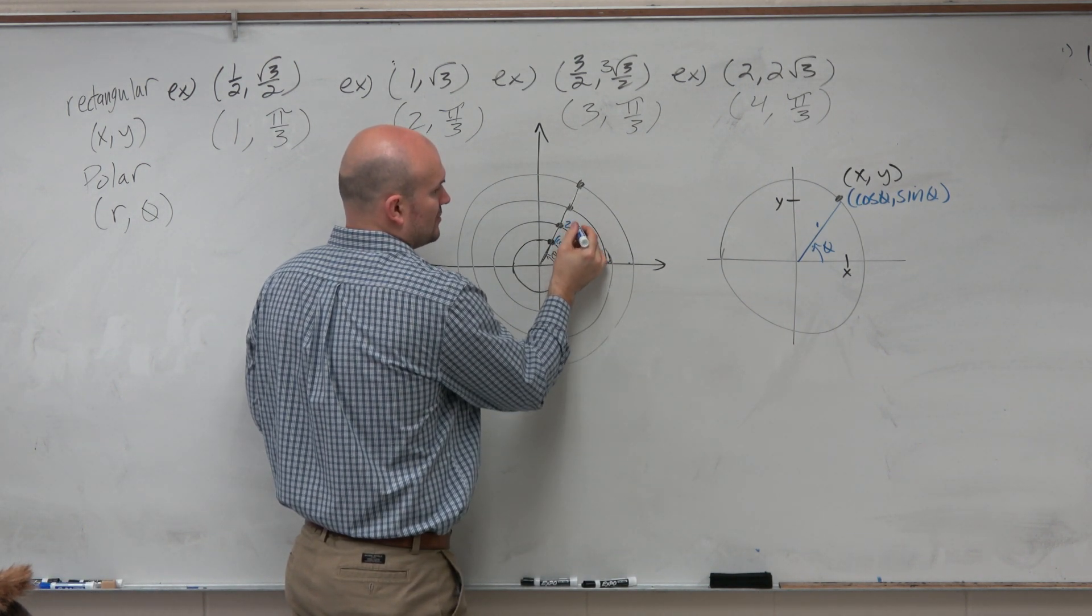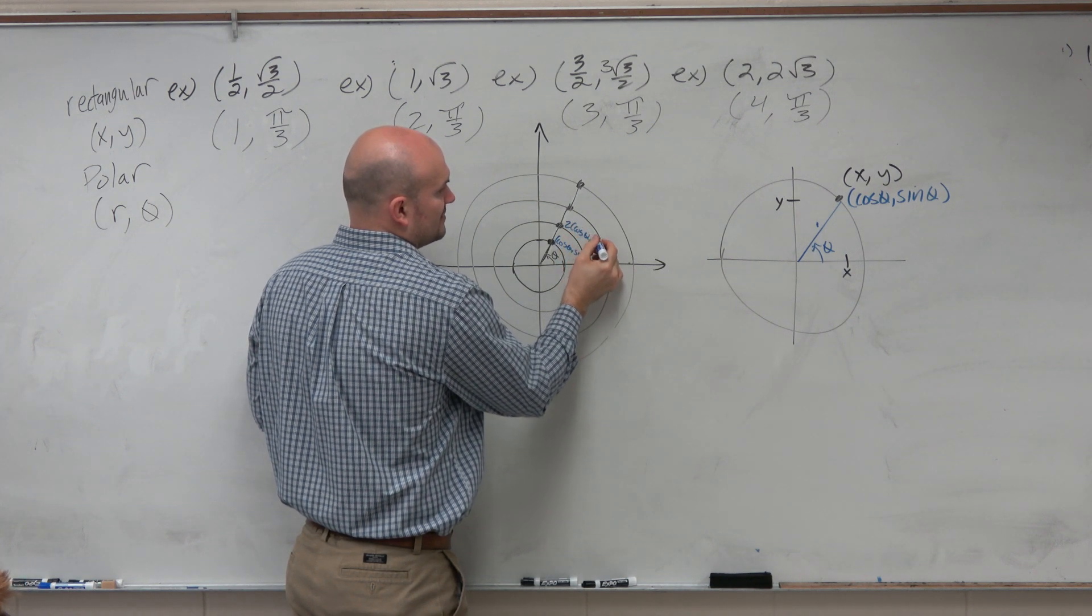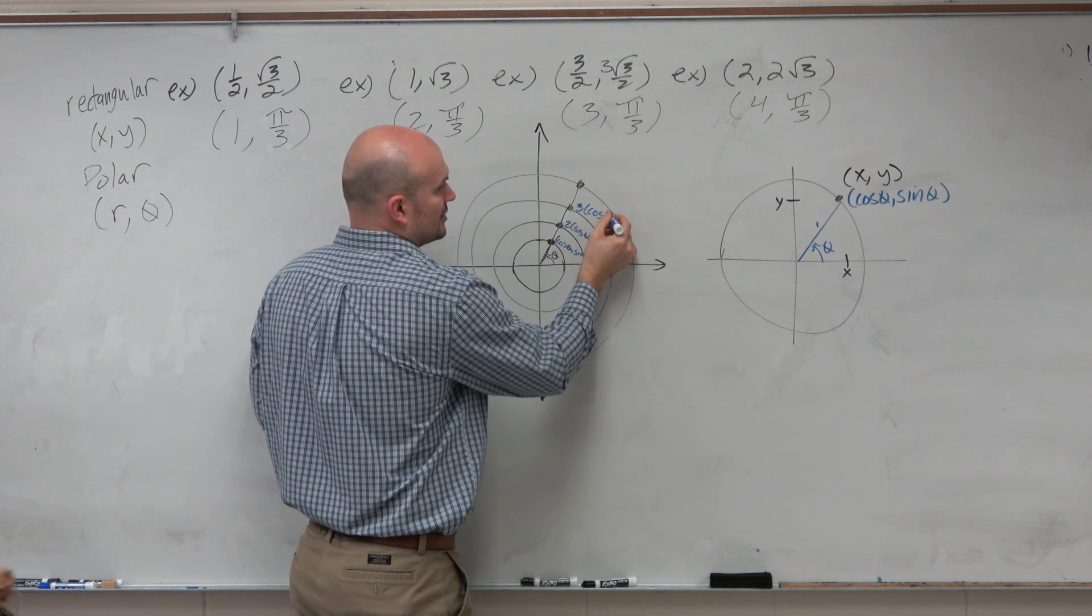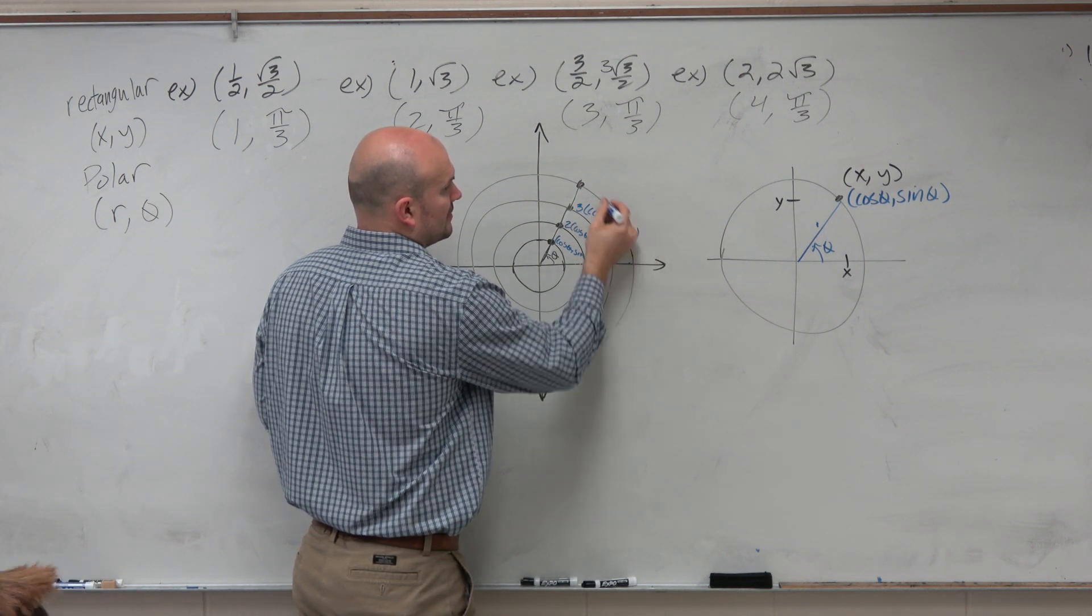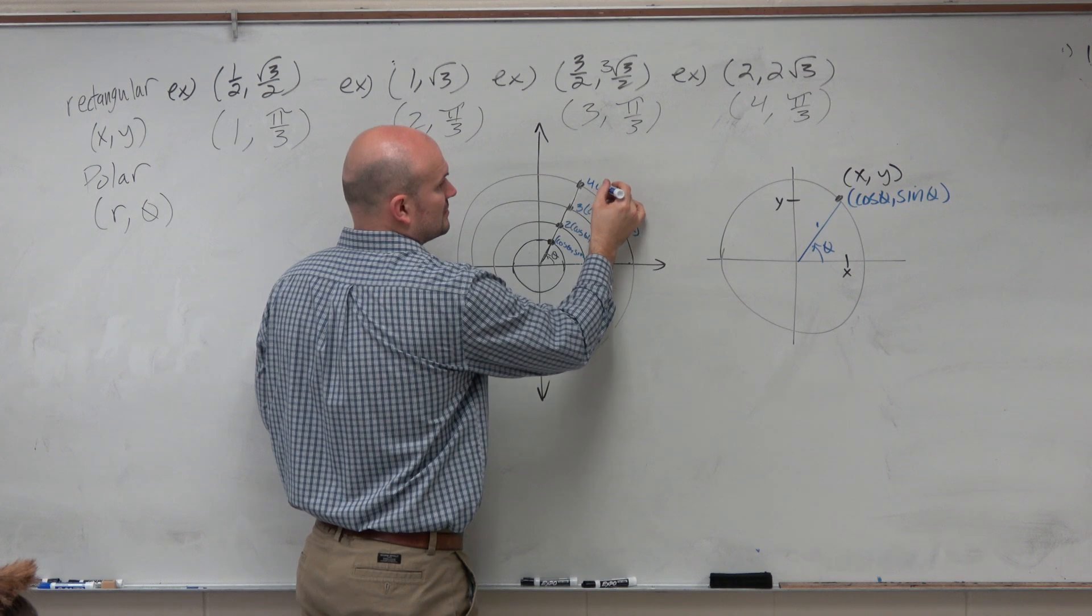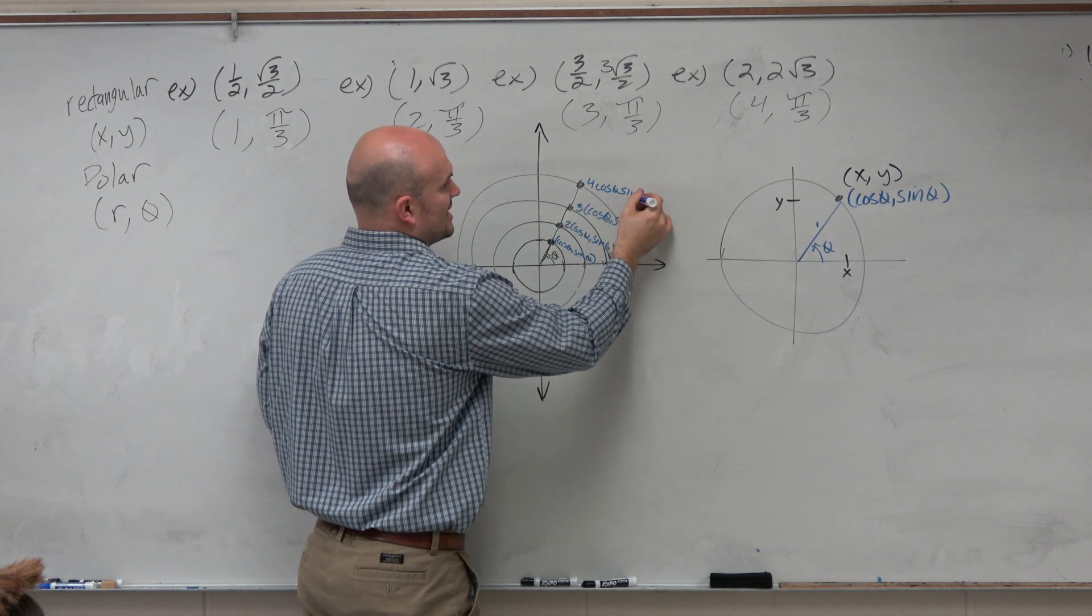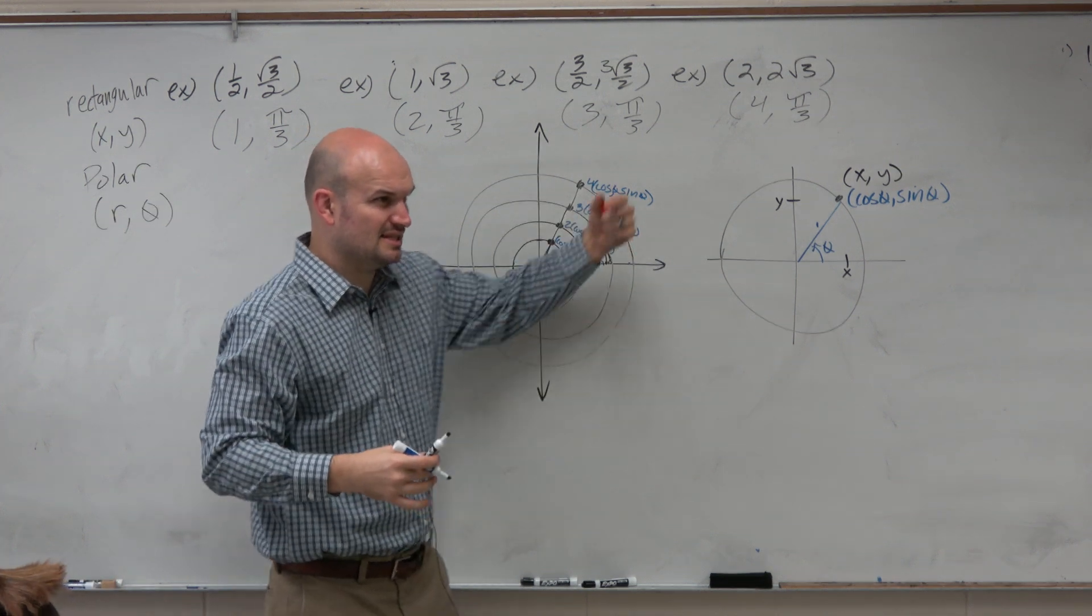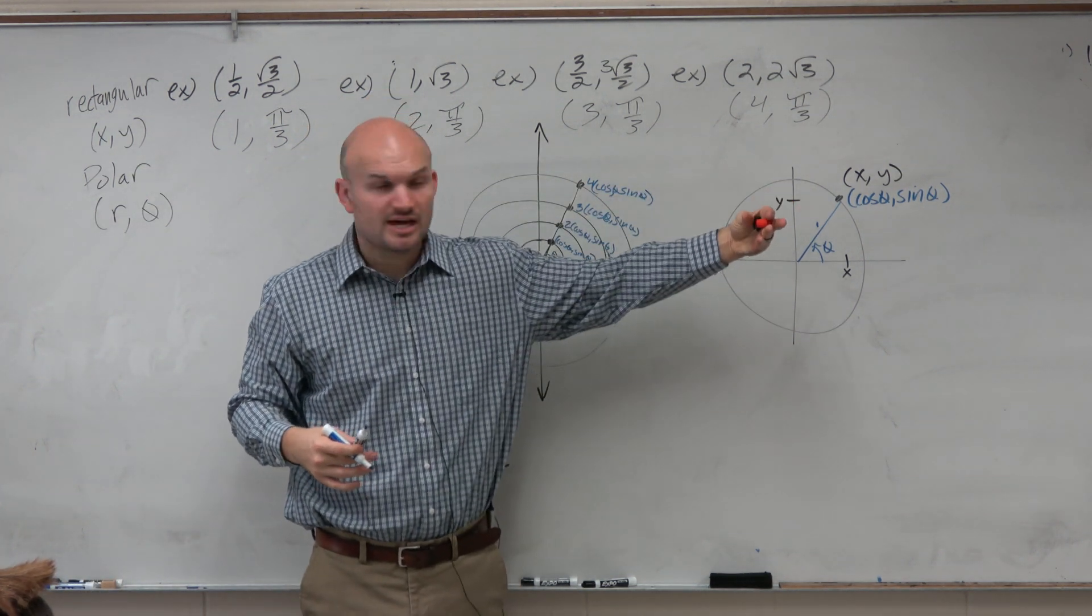This is 2(cos θ, sin θ). This point is 3(cos θ, sin θ). This is 4(cos θ, sin θ). Do you see how that number is your scalar, that 4 is your scalar?